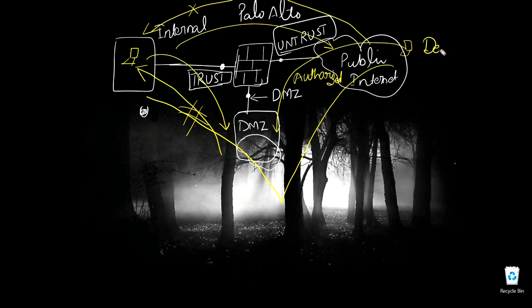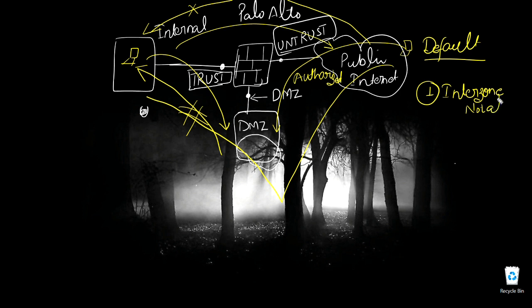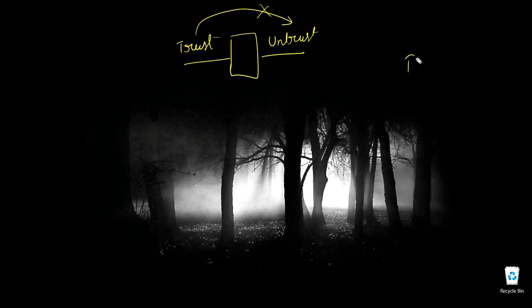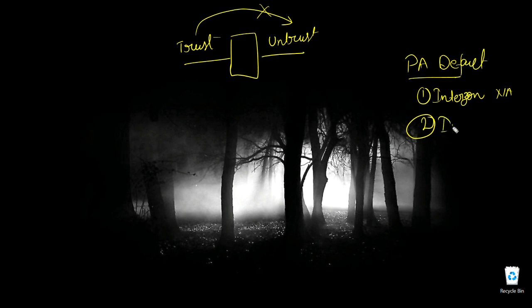Now let's talk about the default behaviors of Palo Alto firewalls. The first default is that inter-zone communication is not allowed. This means if you set up a new firewall with a trust zone and an untrust zone, by default communication between them will not be allowed. That is the Palo Alto default behavior.